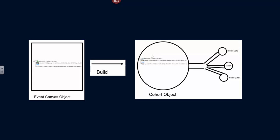So if you think of the Event Canvas object before the build, you see the line, the Index Event Line, Condition Line 1, Condition Line 2. You then build, and the result is a cohort object.